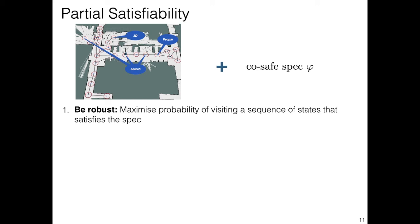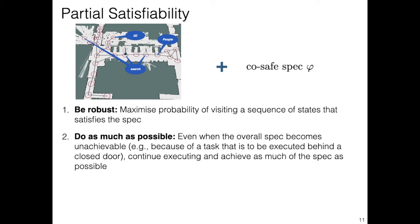First, we want to be robust. That is, we want to maximize the probability of satisfying the Cosafe LTL specification. Second, we want to do as much as possible. This means that, even if part of the task becomes unsatisfiable, the robot should still execute the remainder of the task. Finally, we want to be efficient and minimize the expected cost to execute the achievable parts of our task.